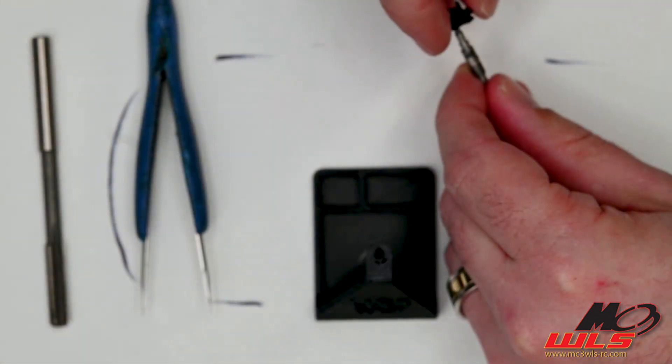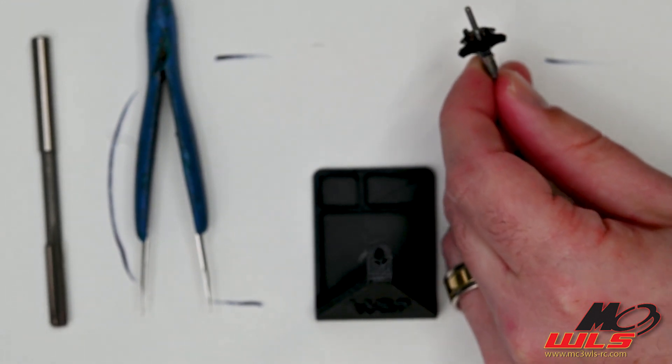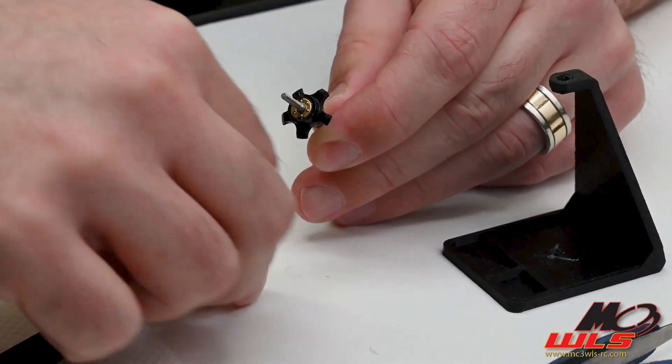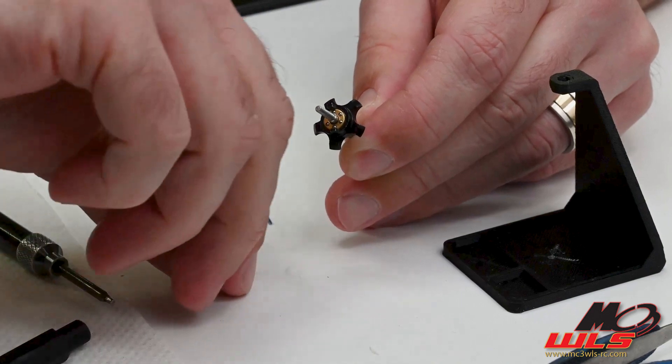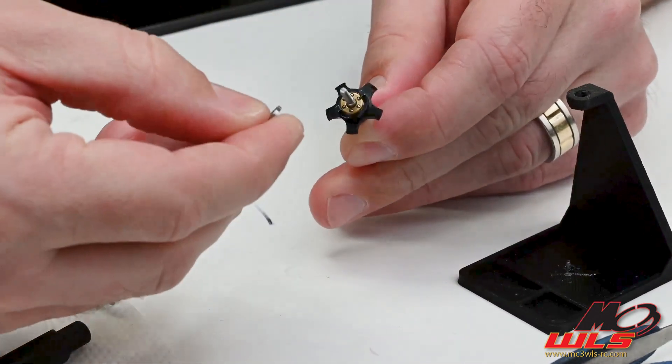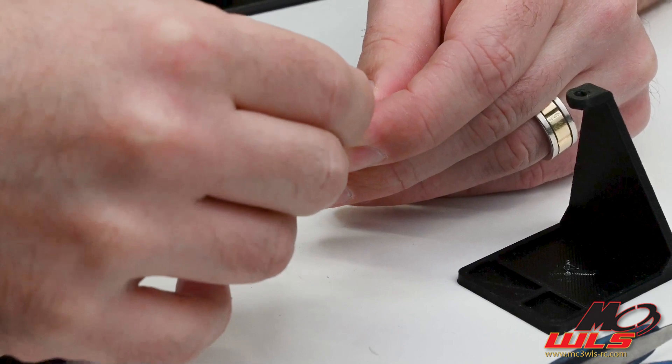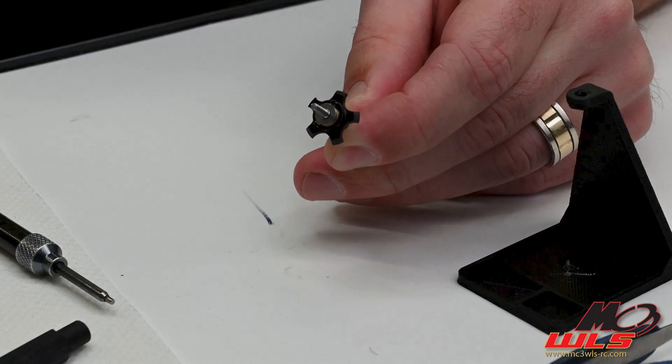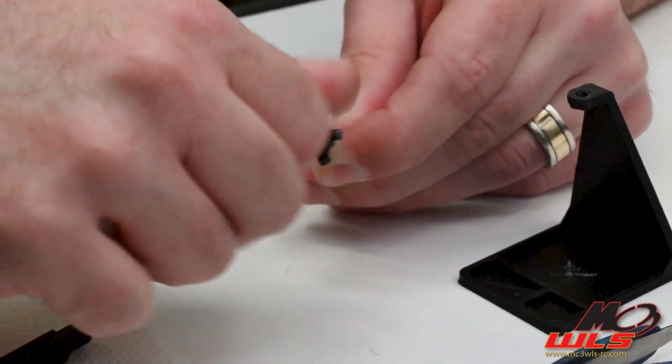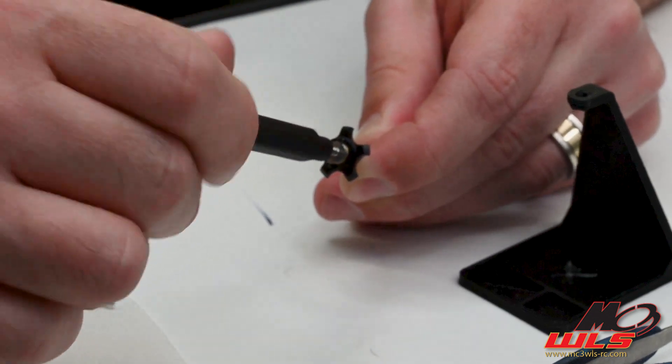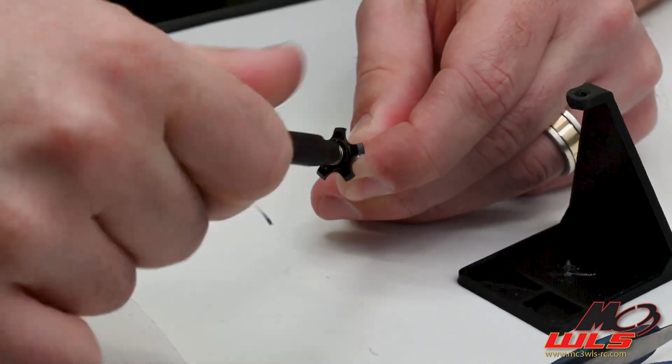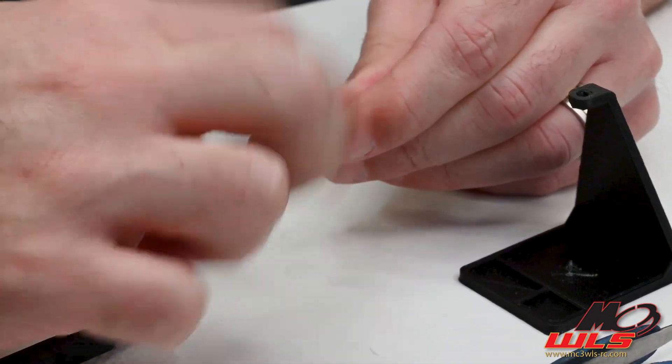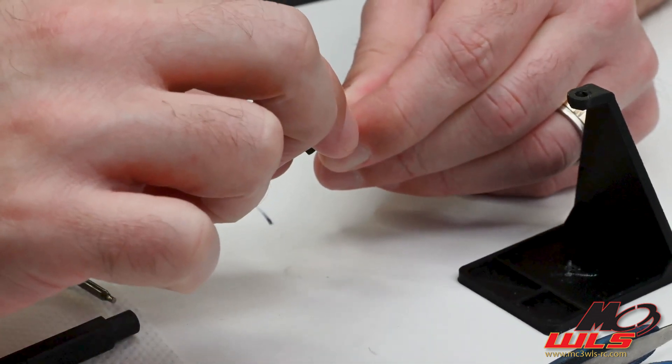You can test this by simply putting the hub on with nothing else, inserting the thrust bearing and the other race. You want to make sure that the race you're using is the small one on the outside and the larger diameter one on the inside. From here, we can tighten up the nut using the opposite side of our tool and screwing it in. If we spin this, it should be nice and free to spin and there should be no binding.